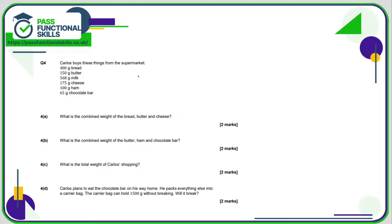Question four. And this is also a calculator question. Combined weight of bread, butter and cheese. So 400 plus 150 plus 175 is 725 grams. Butter, ham, chocolate bar 150 plus 100 plus 65 that's 315 grams. The total weight of the shopping, just add all of these numbers together using the calculator. You'll get 1458 grams. And this question is a bit unusual. Carlos plans to eat the chocolate bar. So he packs everything else into the carrier bag. The carrier bag can hold 1500 grams without breaking. Will it break? Well, no, it won't break. It's not going to break even if he leaves the chocolate bar in there. Because 1458 is less than 1500. So no, it will not break.